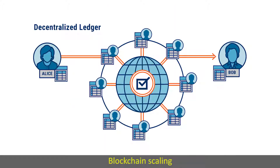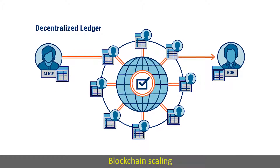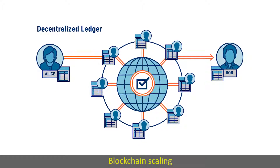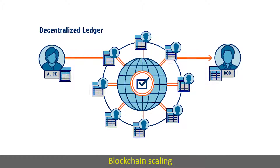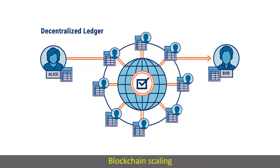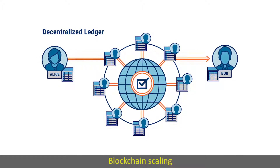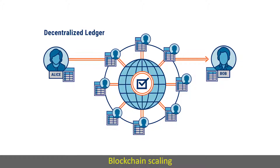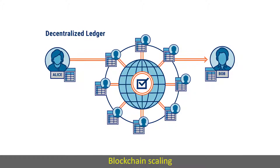The fifth major innovation is blockchain scaling. At present in the blockchain, each member in the network processes every transaction, which is really slow.